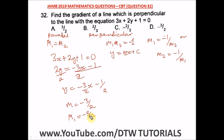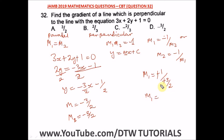So m2 equals negative three over two. Now we find m1 — the gradient of the perpendicular line. m1 equals negative one over negative three over two. The negatives cancel, and two comes up, giving us m1 equals two over three. So the gradient of the perpendicular line is two thirds, and the correct option is B.